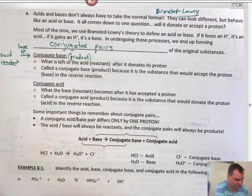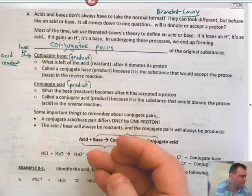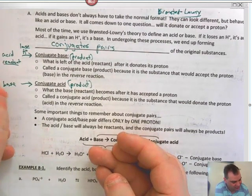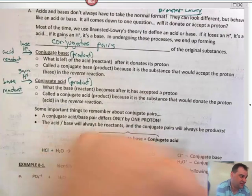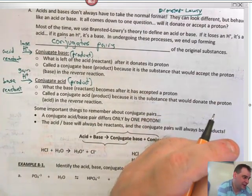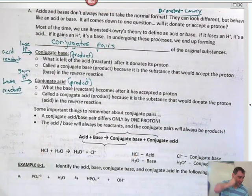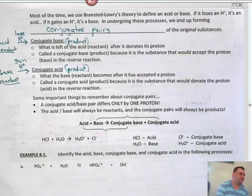Conjugate acids are also on the product side. This is what happens when a base, which is a reactant, gains an H⁺. Bases are winners — they gain H⁺. These always differ by one proton. If something's losing H⁺ and something's gaining H⁺ — kind of like if the Dallas Cowboys win the game against the Philadelphia Eagles, the Eagles lost. Same thing here. The conjugates will always be on the product side.